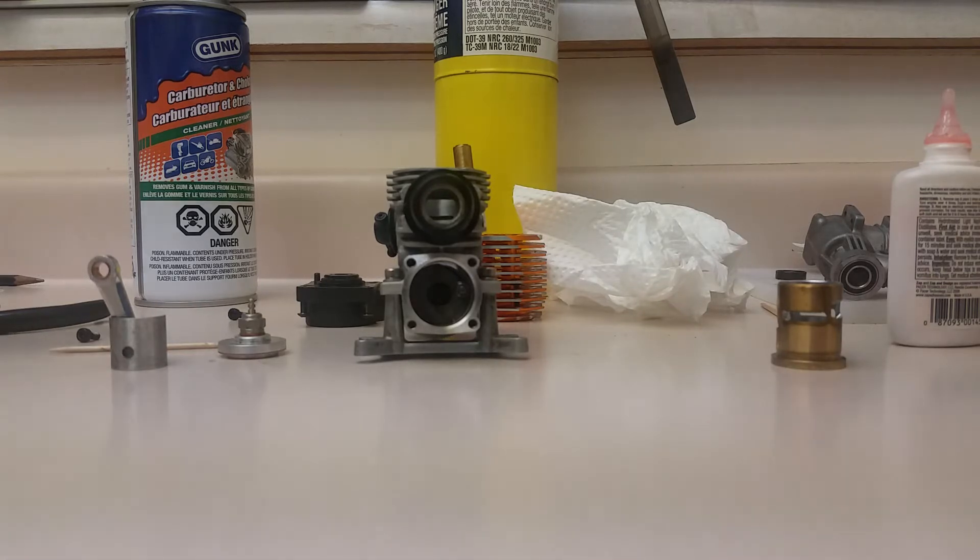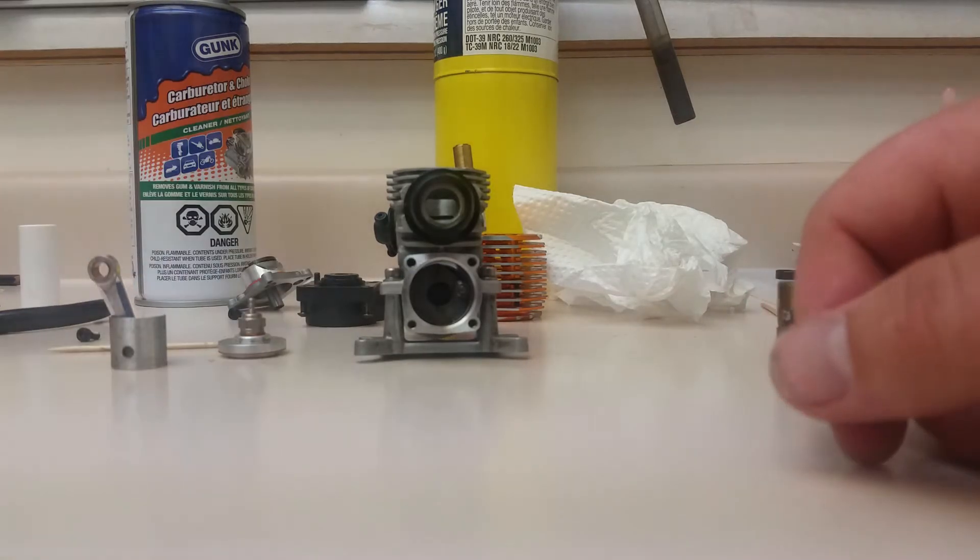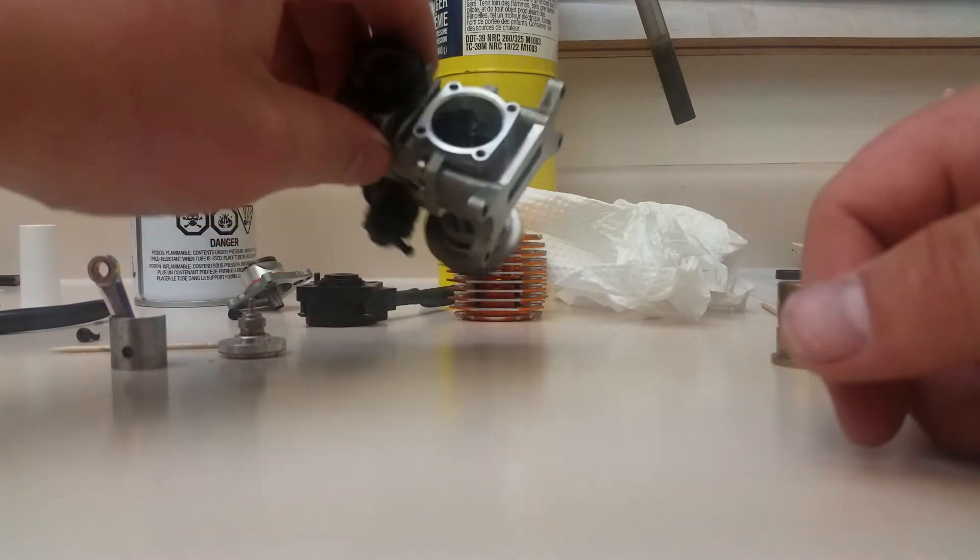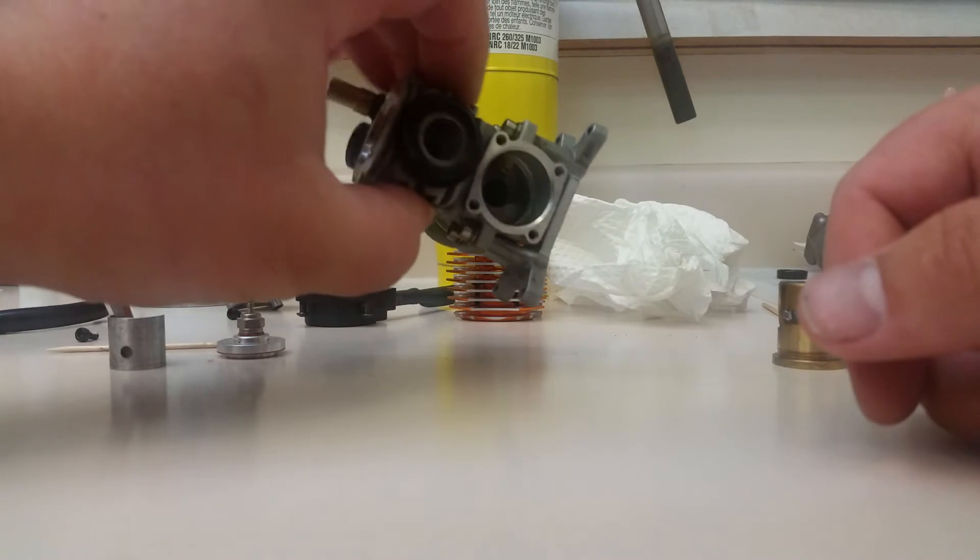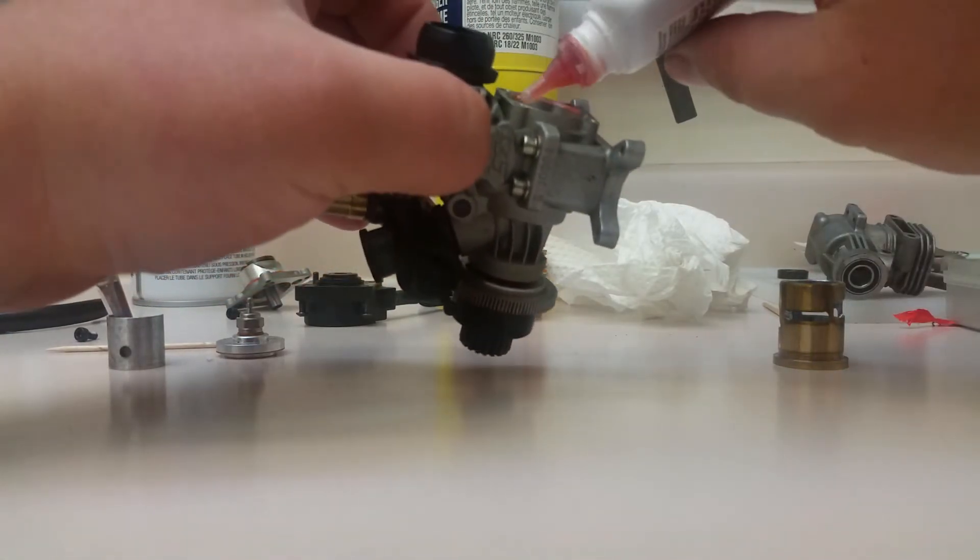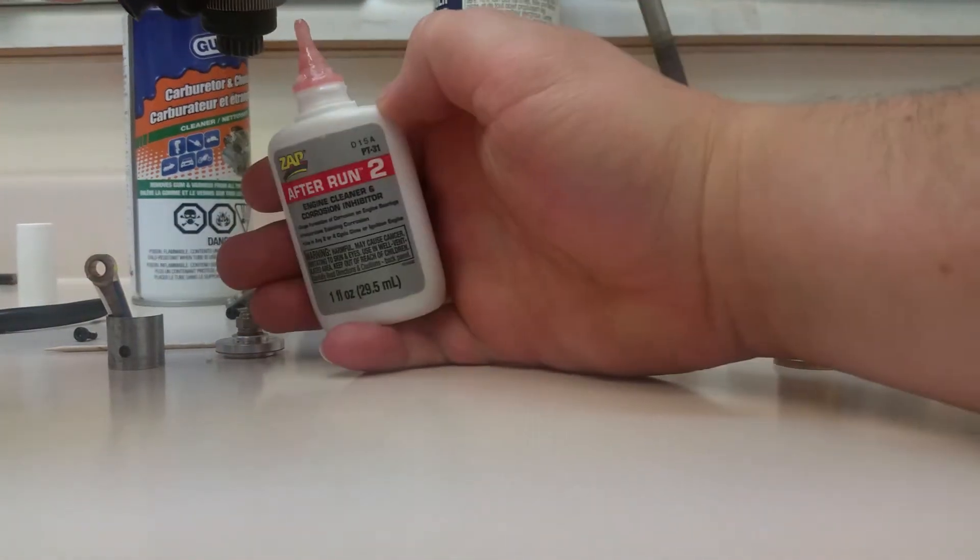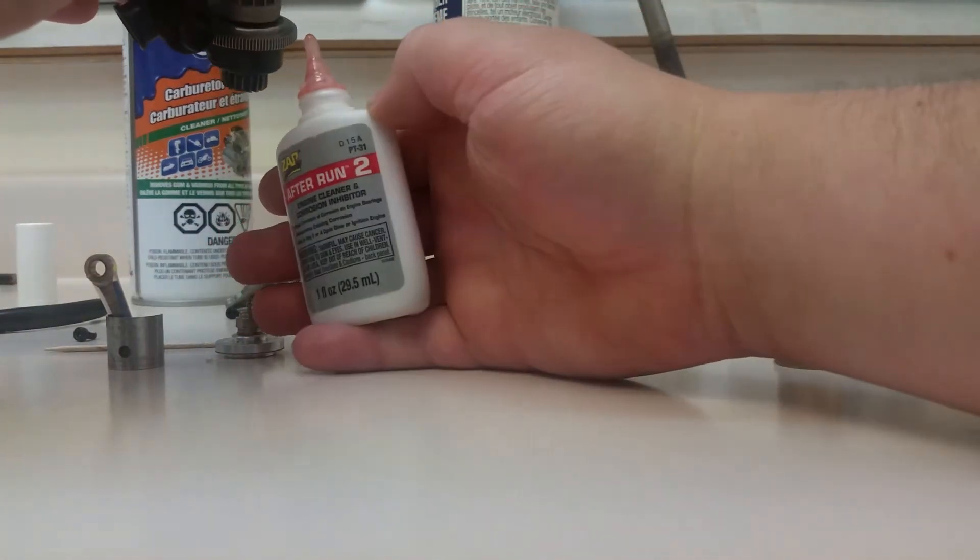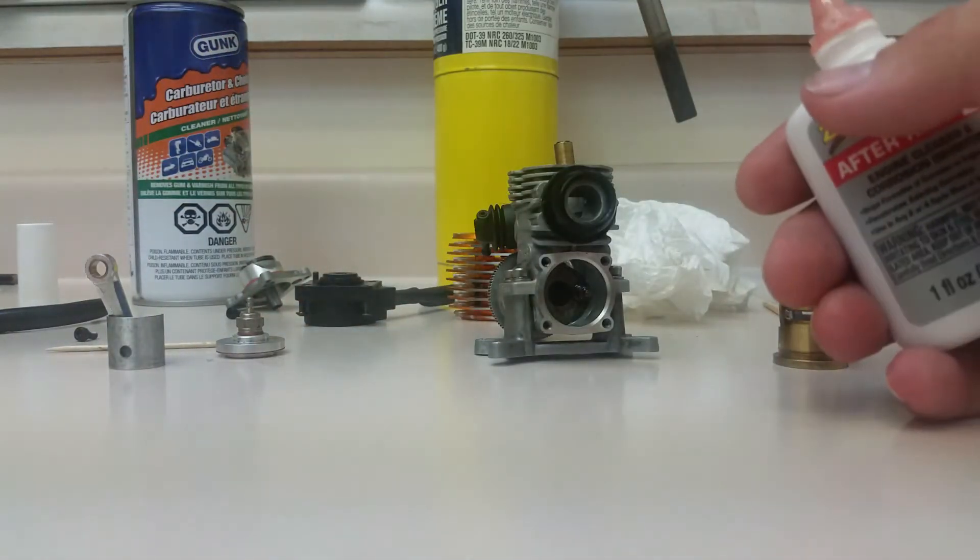We're going to put it back together on camera, hopefully my phone doesn't delete the video this time. I've had this out already and I've cleaned it because there was some I guess varnished oil that was in there from sitting for so long. We're going to use some Zap after-run oil and put some on the crank pin and some on the wrist pin.